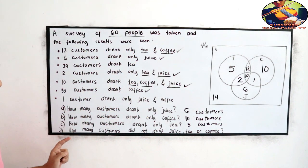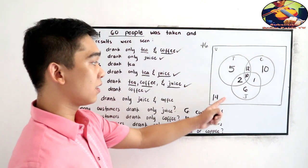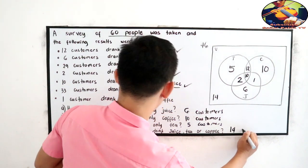And last, how many customers did not drink juice, tea, or coffee? Did not drink. So there are 14 customers.